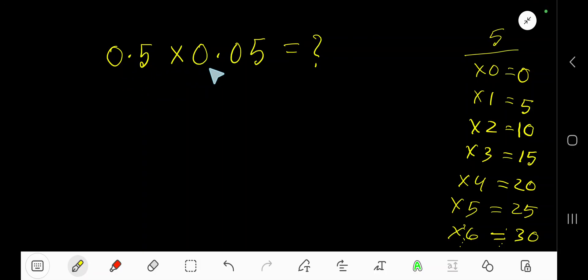0.5 times 0.05 equals what? That is, what is the product of multiplying two factors: 0.5 times 0.05? These two factors are decimal numbers, so look, write the number ignoring the decimal. We are getting 0.5, which is 5.